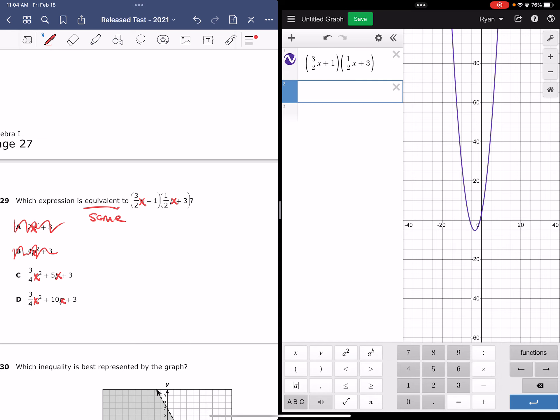Next, we will type in letter C as our answer choice, 3 fourths x squared plus 5x plus 3. Notice here that we have the exact same graph as our given expression. And so that makes me very confident that letter C is the correct answer.